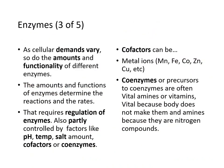As cellular demands vary, so do the amounts and functionality of different enzymes. The amounts and functions of enzymes determine reaction rates, which requires regulation of enzymes. Regulation is partly controlled by factors like pH, temperature, salt, cofactors, and coenzymes. Cofactors are typically metal ions — manganese, iron, cobalt, zinc — which is why we take mineral supplements. Coenzymes are typically vitamins; they're called vital because the body does not make them, and they are nitrogen compounds.